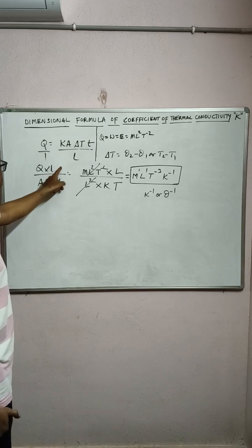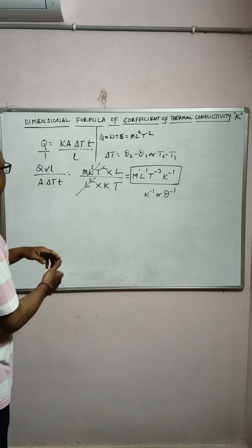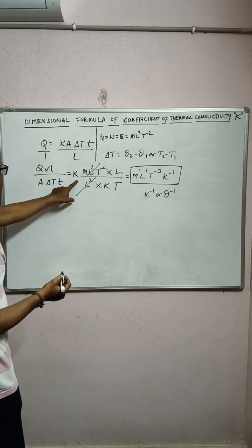If you cross multiply, you get Q×L divided by A×∆T×t equals K. So this equals K, coefficient of thermal conductivity.